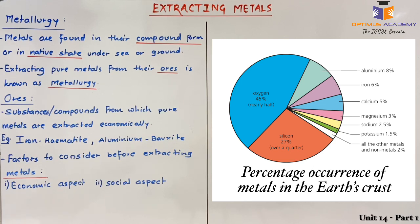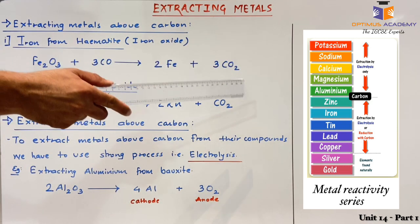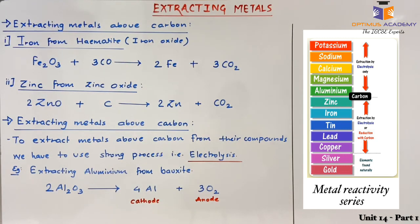We are going to discuss the process of extraction of metals based on the metal reactivity series. Once the ores are extracted, the next step is to extract pure metals from the ore. The extraction process for a particular metal depends on the position of that metal in the metal reactivity series, which you can see in the diagram alongside. Note that we cannot sacrifice one metal to obtain another. For example, magnesium is above aluminium in the reactivity series, so magnesium can displace aluminium from aluminium oxide, giving us pure aluminium.